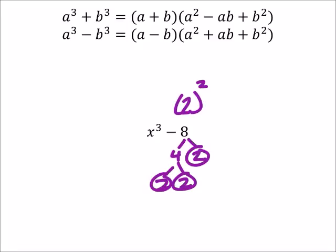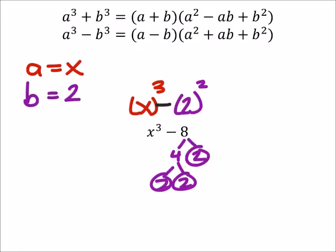So 8 would be 2 cubed. x cubed is just x cubed. So a is x and b is 2. We're just going to replace all the a's with x and all the b's with 2.